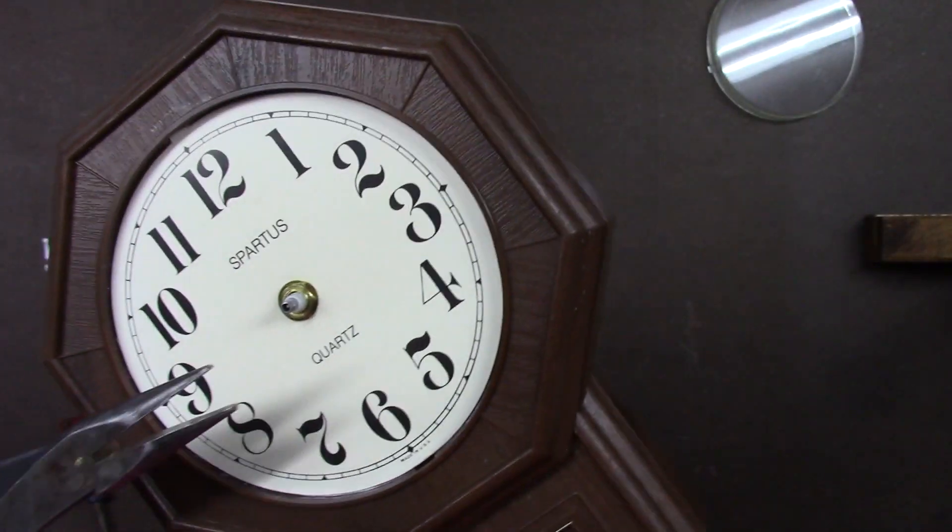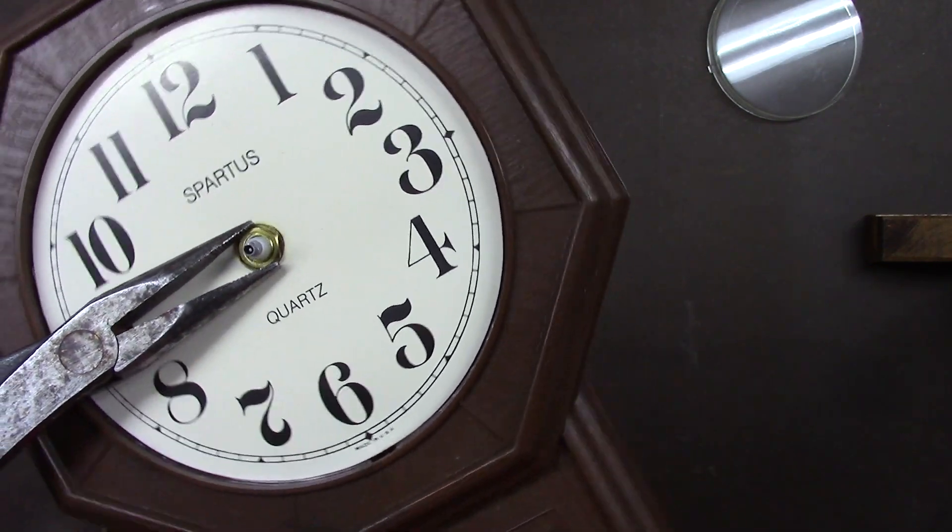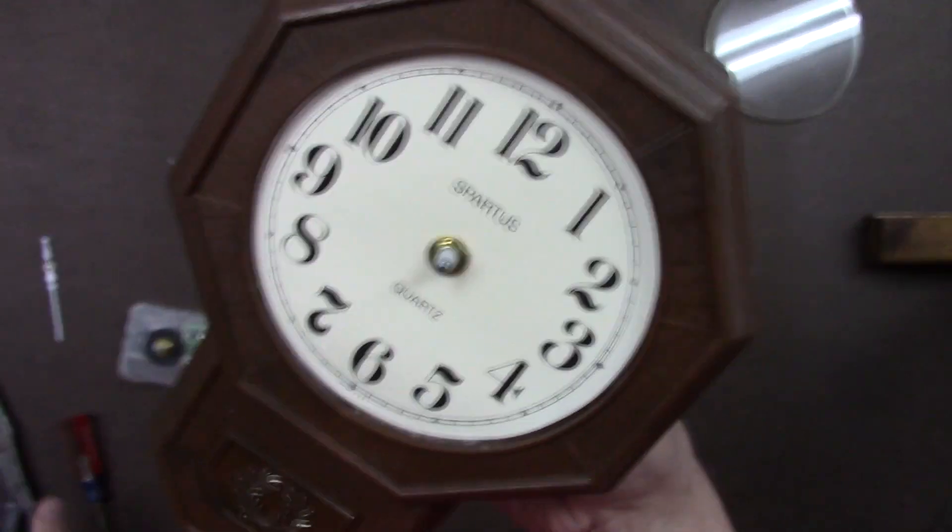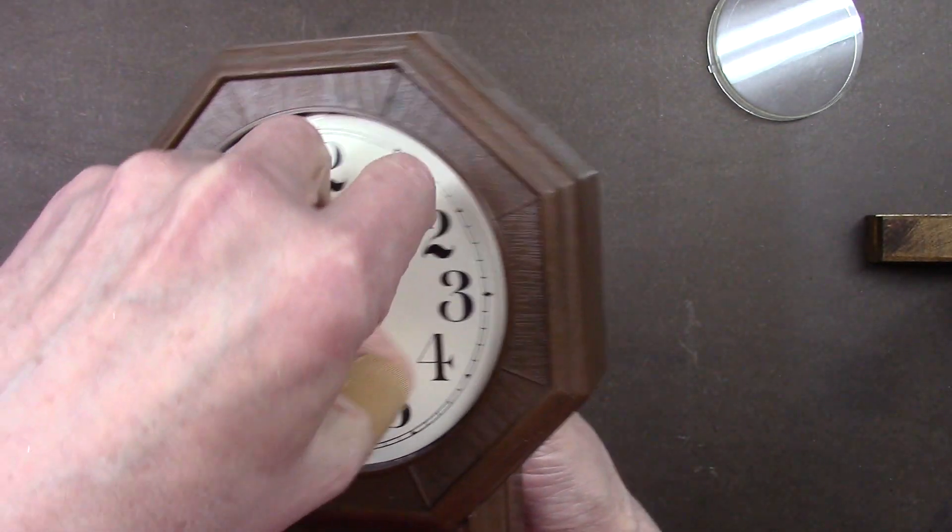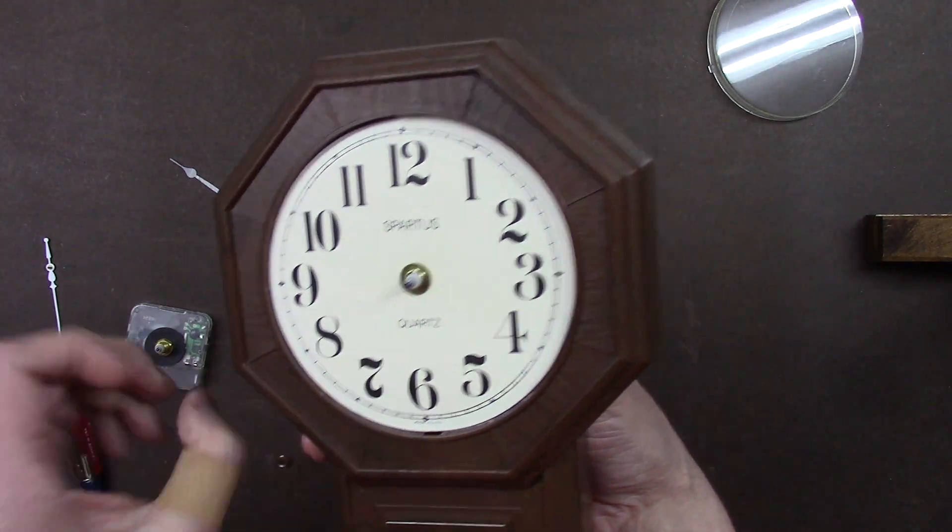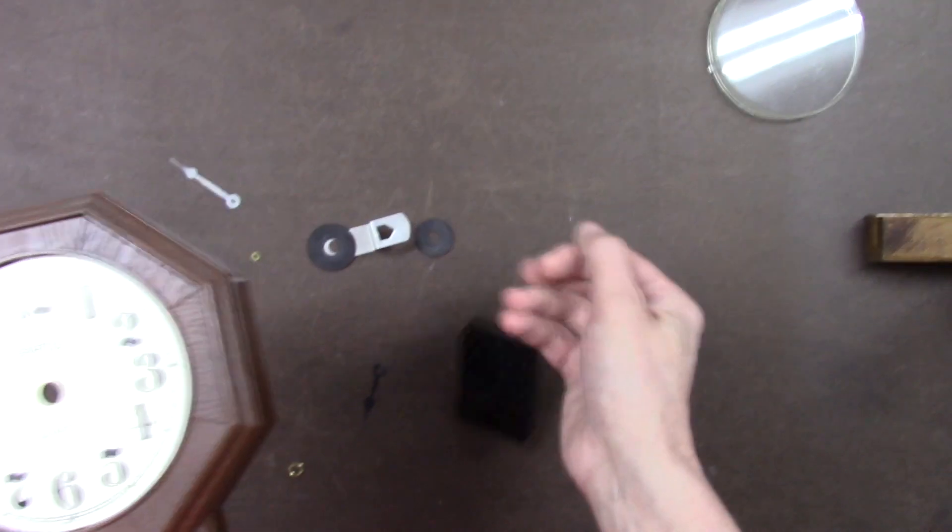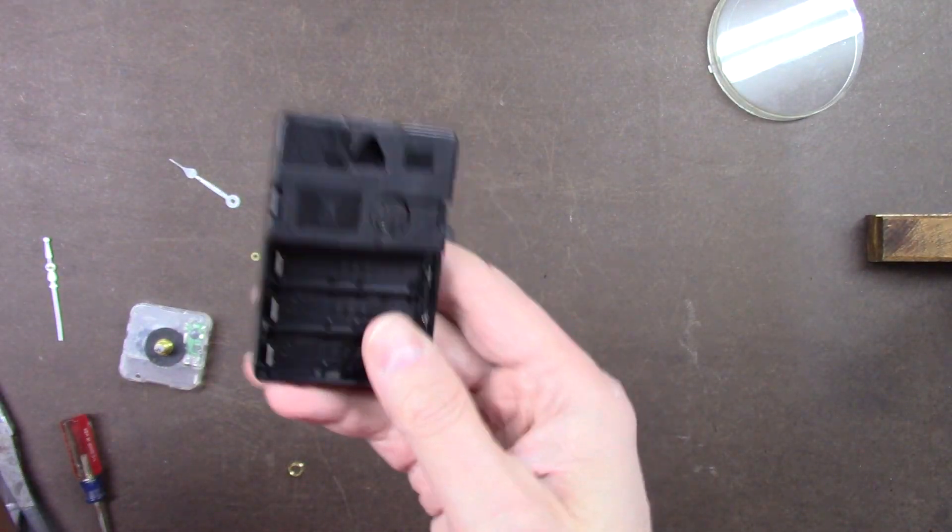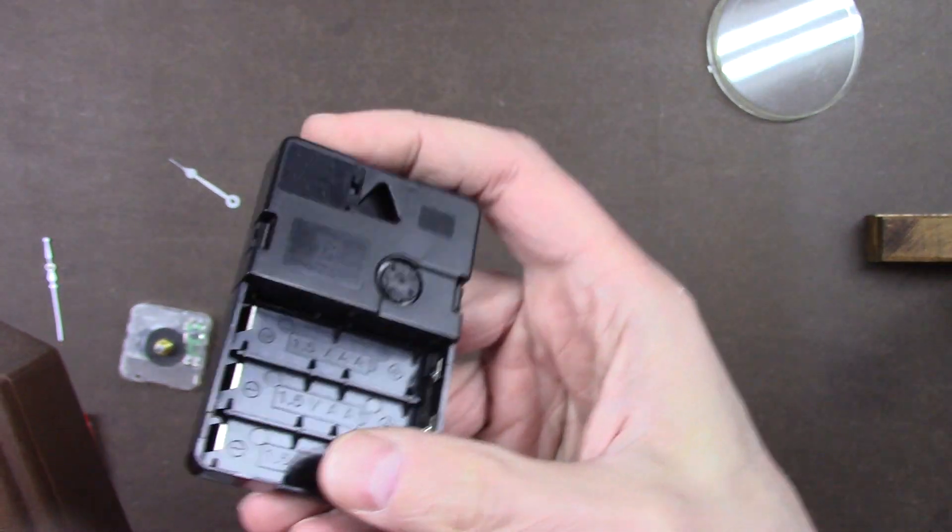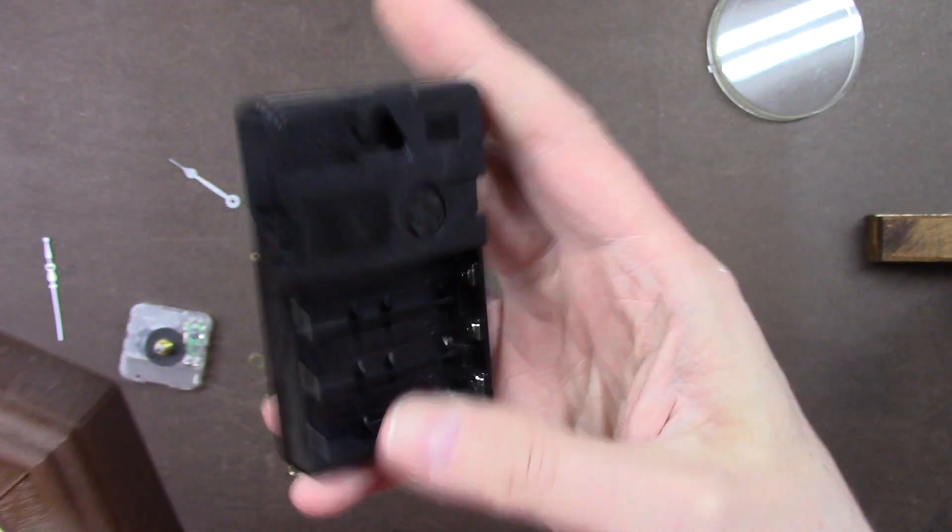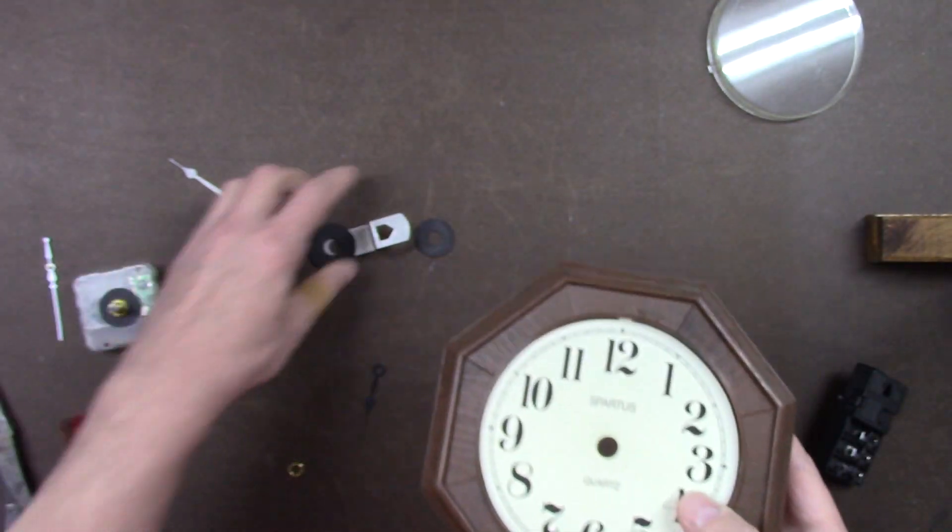Now the nut might be on there really good. So carefully without scratching the paper, loosen the nut, and then use your fingers to take the nut off. Your fingers are softer than the pliers, so you don't want to scratch the paper. Take the movement out. They say this movement is supposed to be so good, but it turned out to be a piece of junk. If you know what company this is, let me know in the comments. I don't want to buy this thing again.